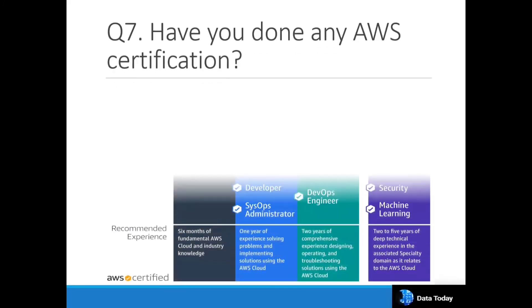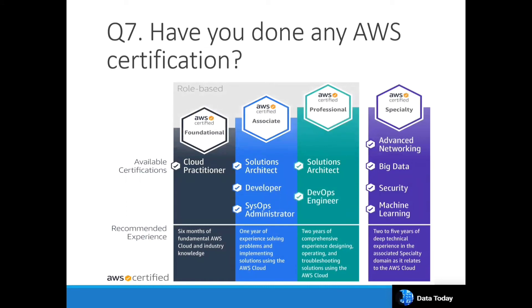Interviewers often ask about AWS certifications. If you have little experience or are a fresher, start with the Cloud Practitioner certification — even in college. It adds weightage to your resume. With around one year of experience and real AWS implementations, go for Associate-level certifications: Solutions Architect, Developer, or SysOps Admin. If you are more on the coding side, choose Developer; if you design multi-service solutions, choose Solutions Architect — both have their own value.